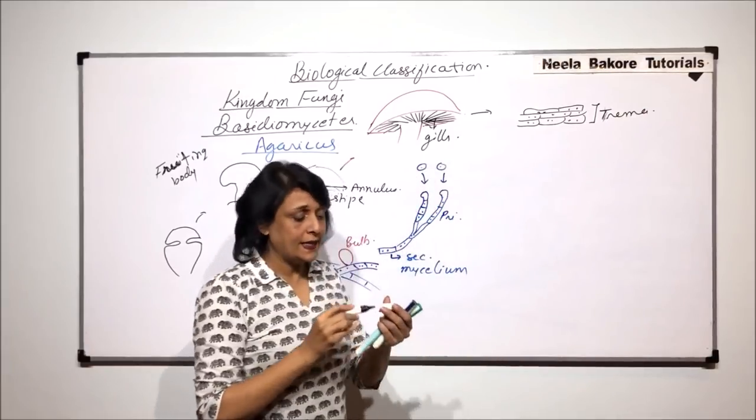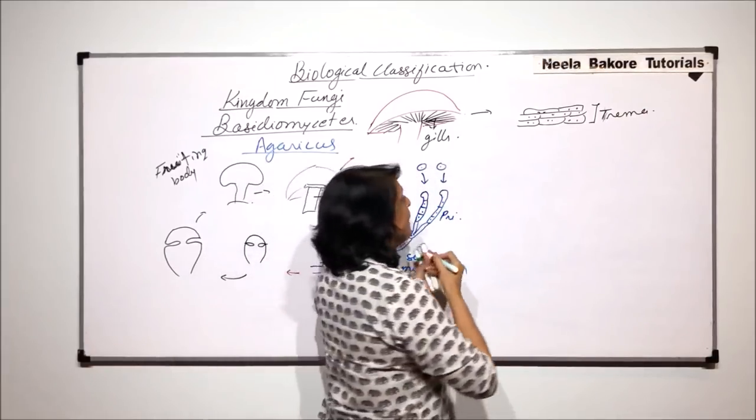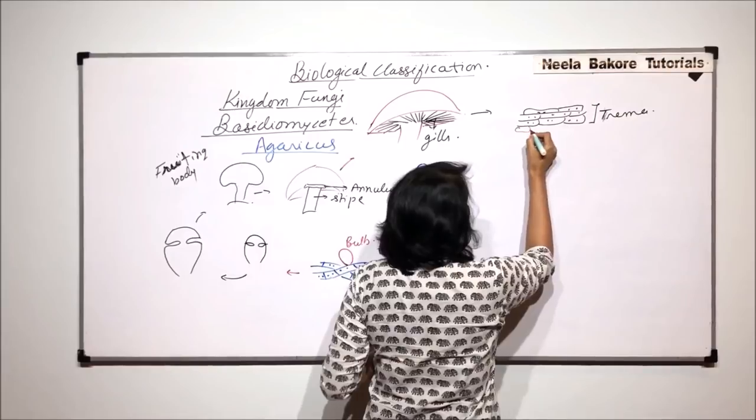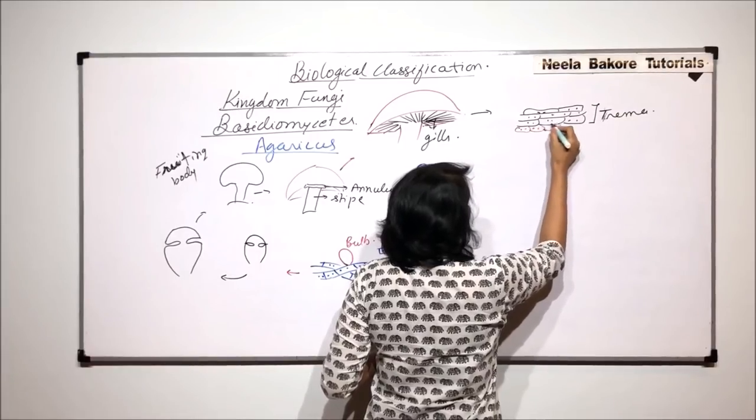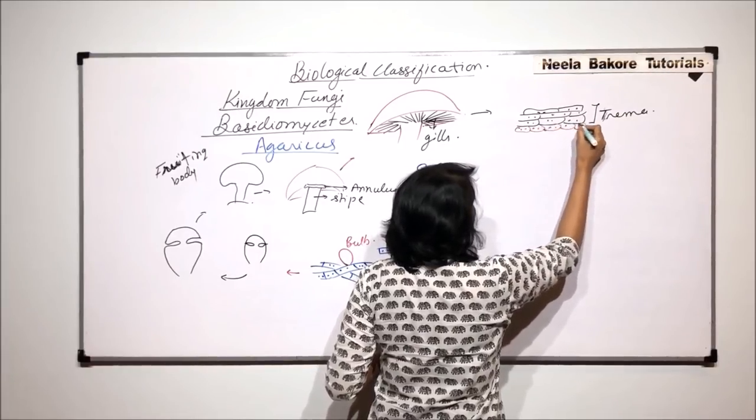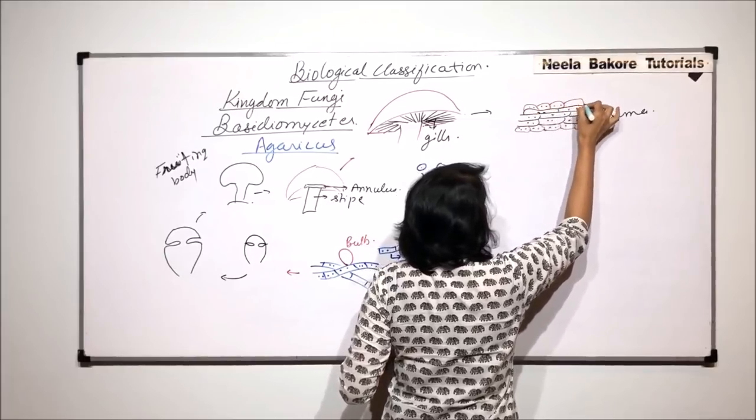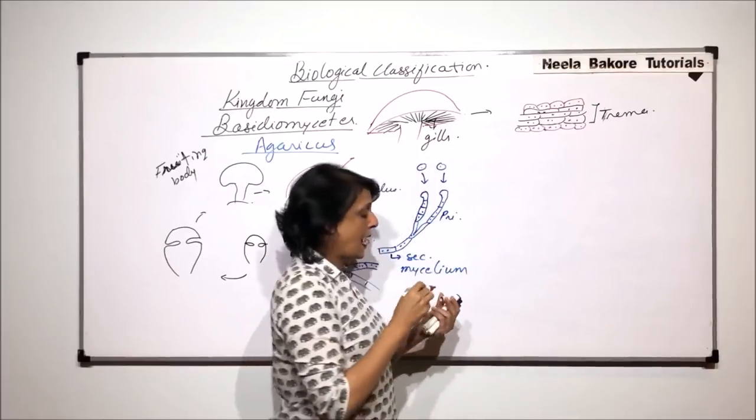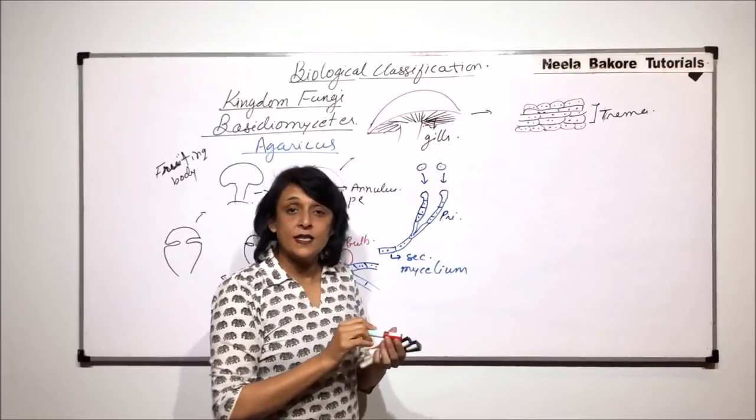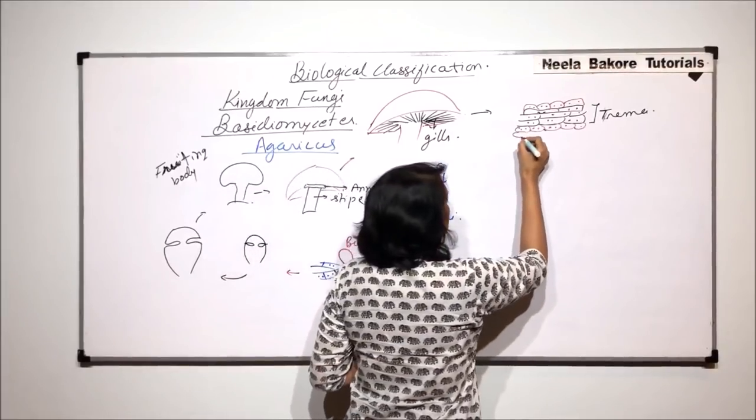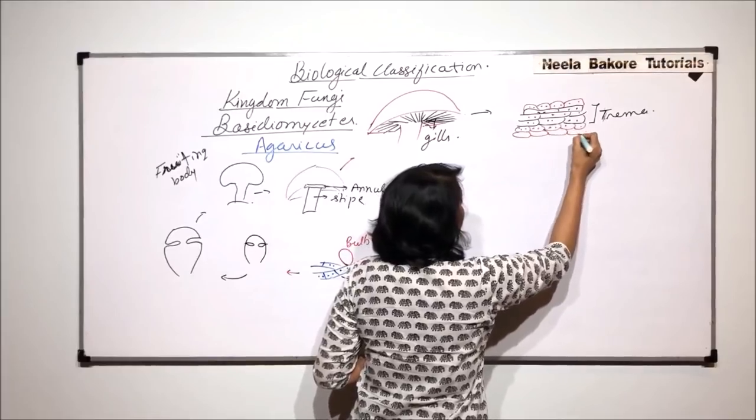On either side we find that there are few more dicharyonic hyphae. But here we find them into smaller segments. And this is known as the sub-hymenae. Because this is the part from where we would find the baesidia.